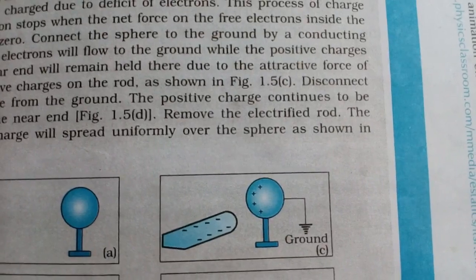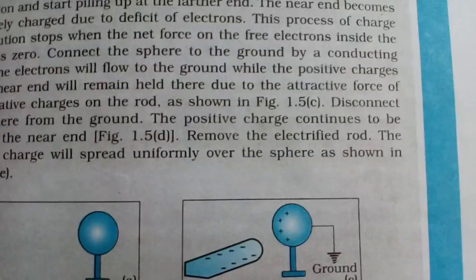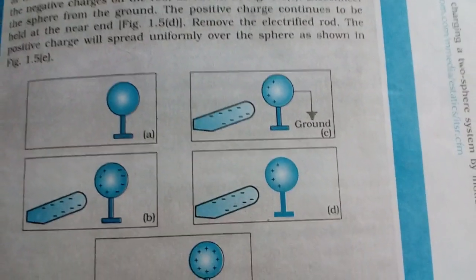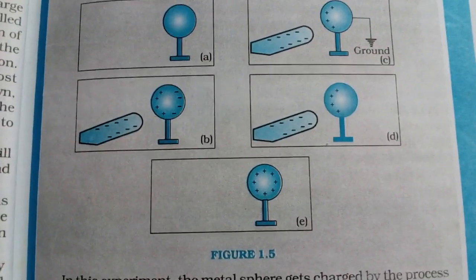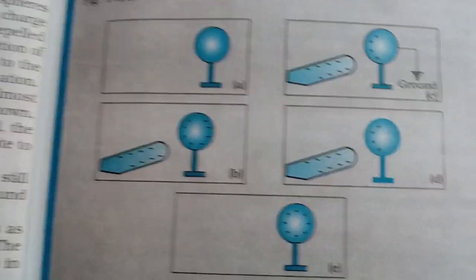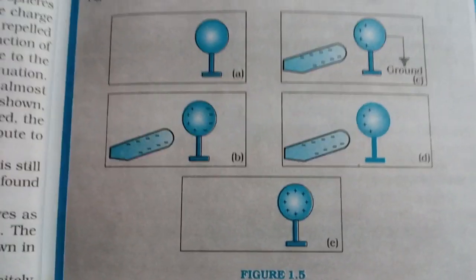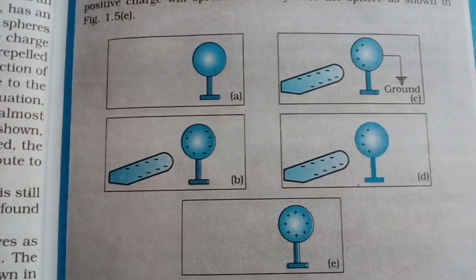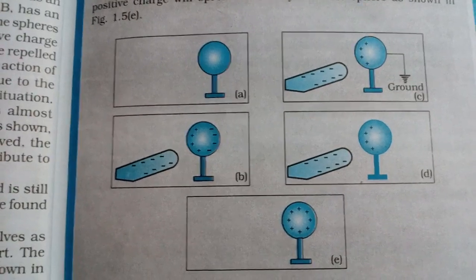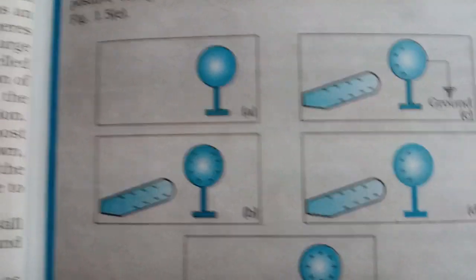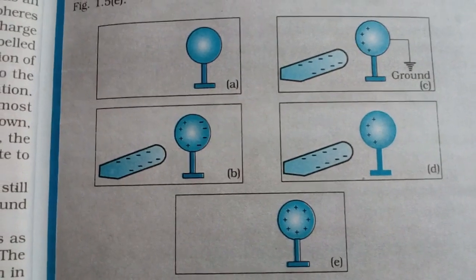Then the sphere is grounded — connected to the earth with a conducting wire. All the negative charge (electrons) flow into the earth. After that, the negatively charged rod is removed, and the positive charge distributes uniformly throughout the sphere because it is a conductor. In this way the sphere is given a positive charge without touching it — by induction. In conduction, the same charge is transferred; but in induction, the opposite charge is obtained.